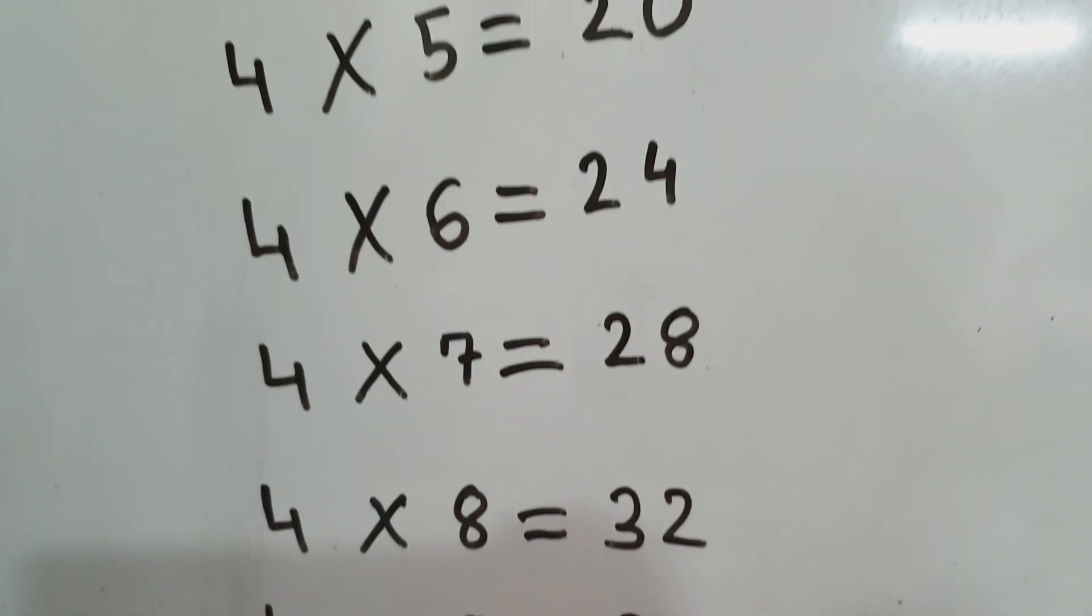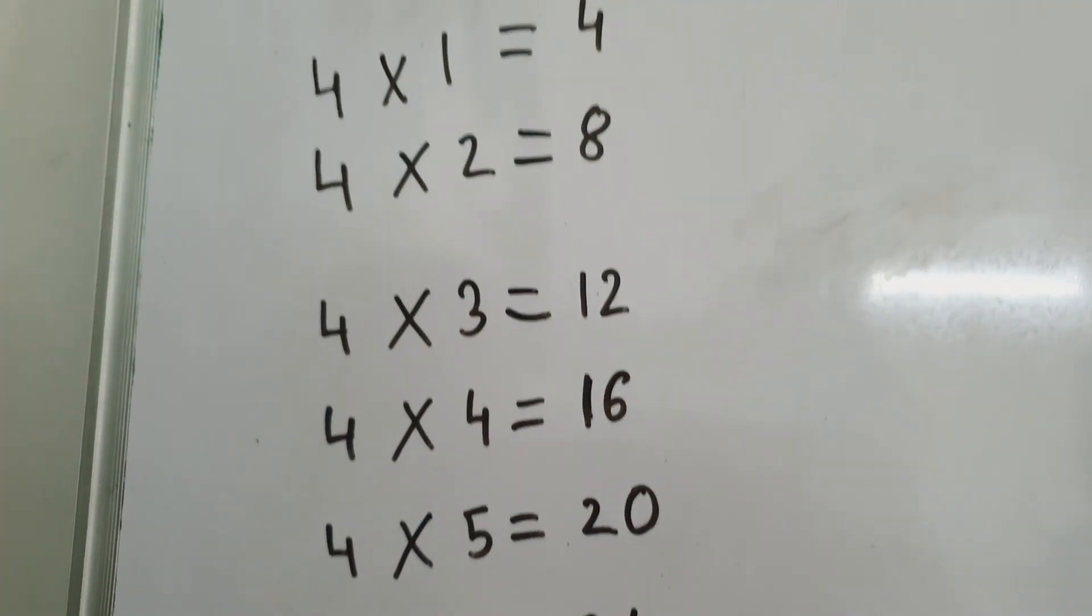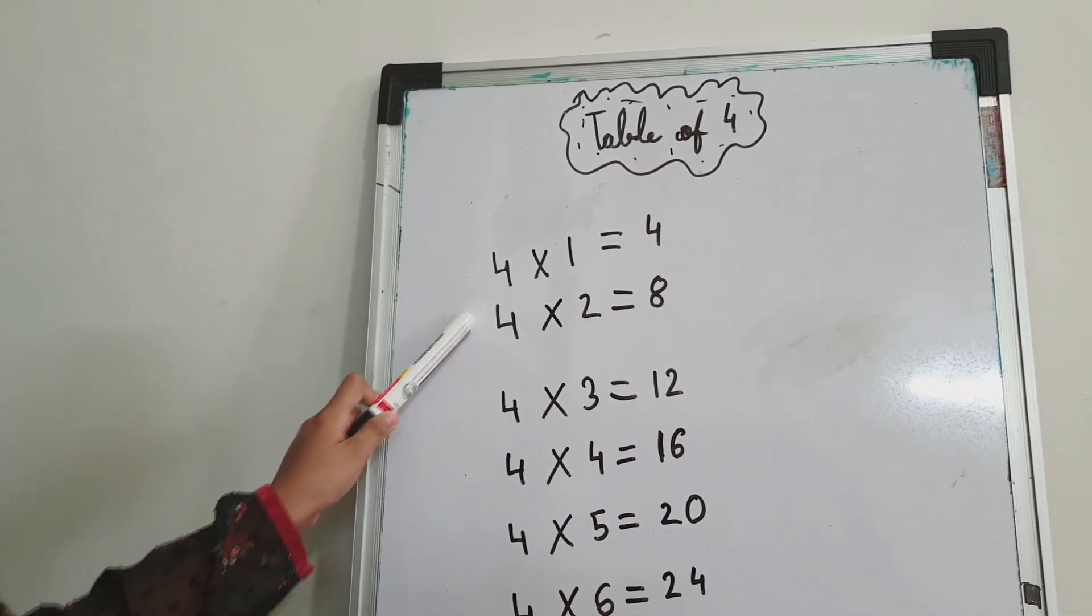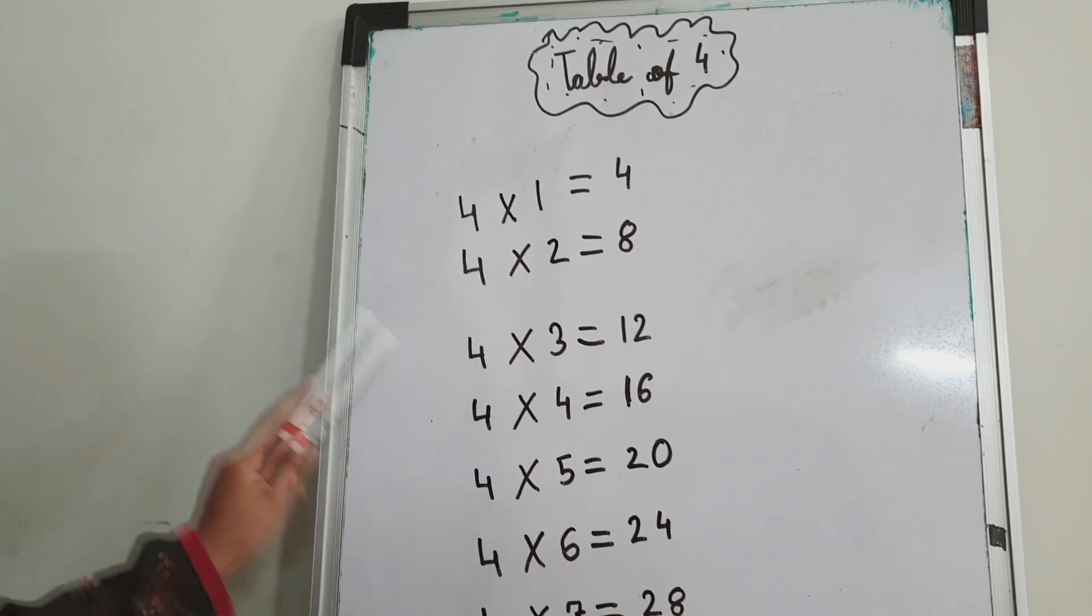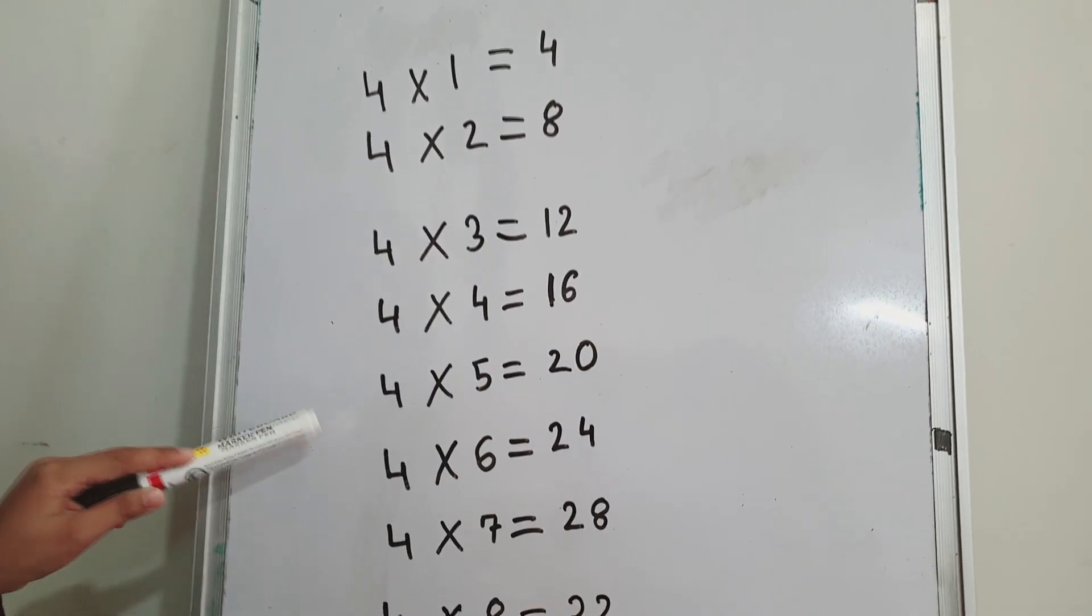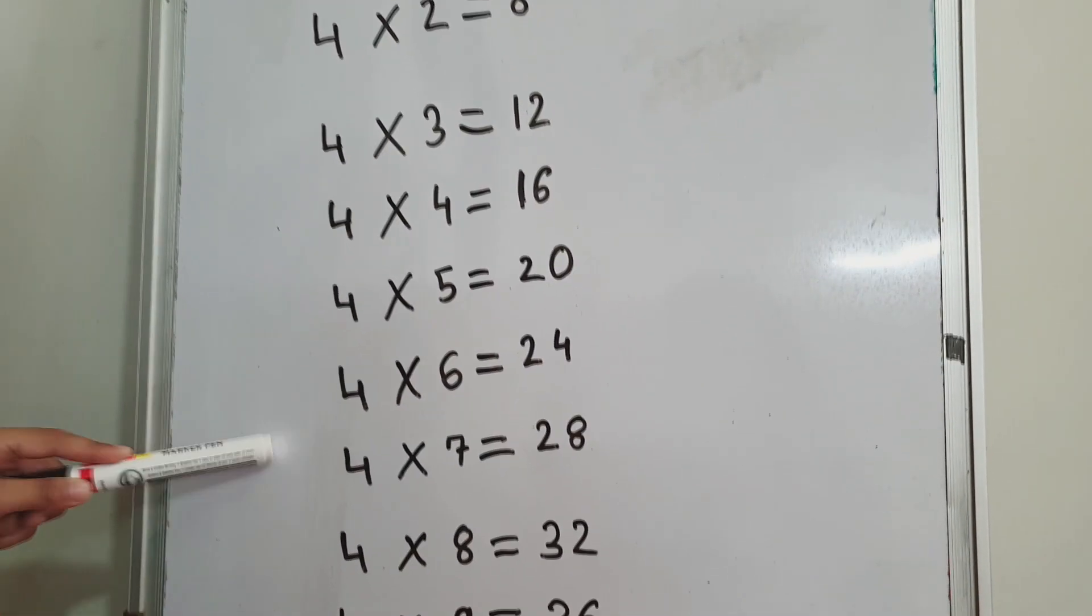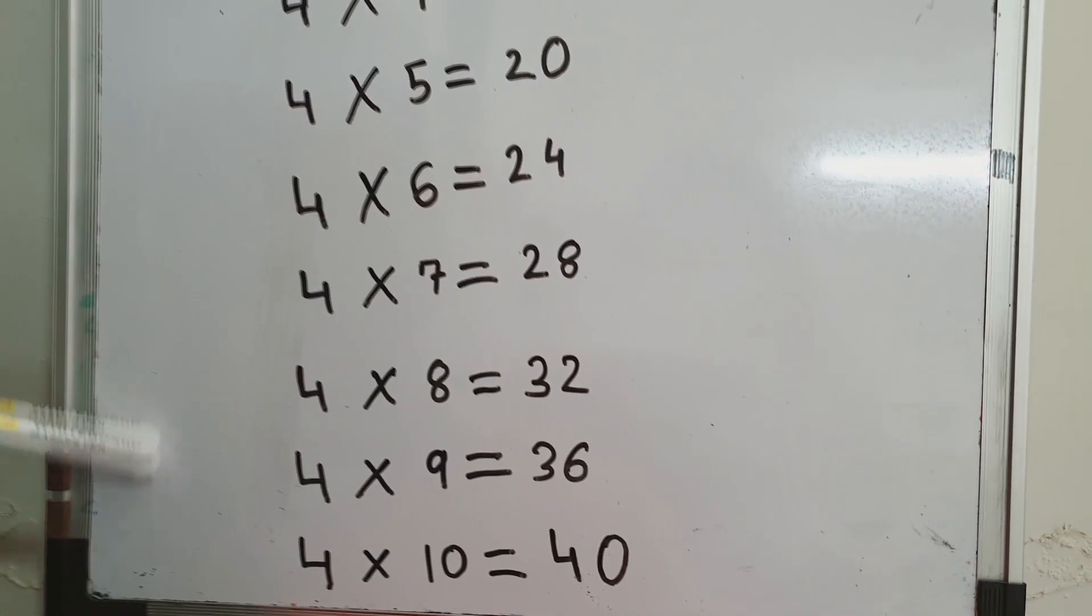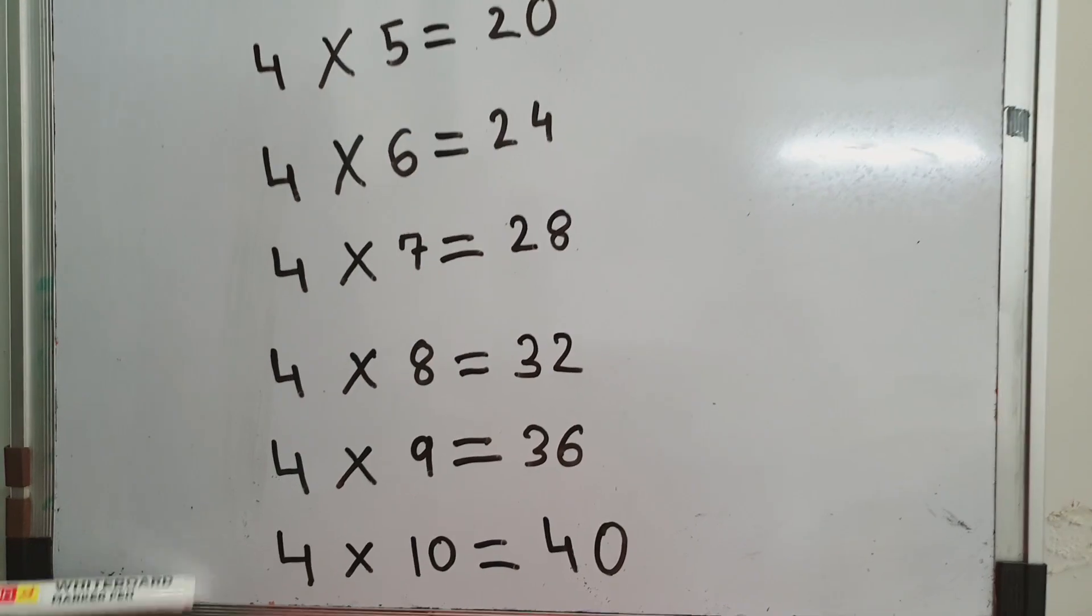Very good, we learnt the table of 4. Let's revise it again! 4 ones are 4, 4 twos are 8, 4 threes are 12, 4 fours are 16, 4 fives are 20, 4 sixes are 24, 4 sevens are 28, 4 eights are 32, 4 nines are 36, 4 tens are 40.